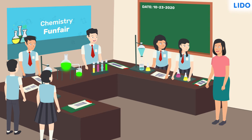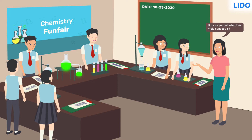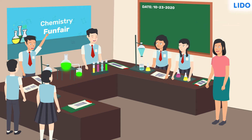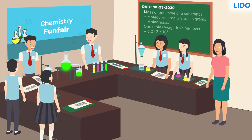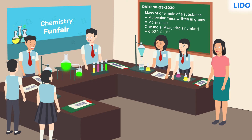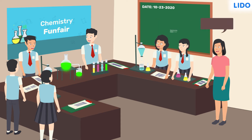Rina ma'am asks, 'But can you tell what this mole concept is?' Sachin is ready with the answer. According to the mole concept, the mass of 1 mole of a substance is equal to the numerical value of its molecular mass in grams. And 1 mole of a substance represents 6.022 × 10 raised to 23 molecules. This number is also called Avogadro's number. 'Perfect!'